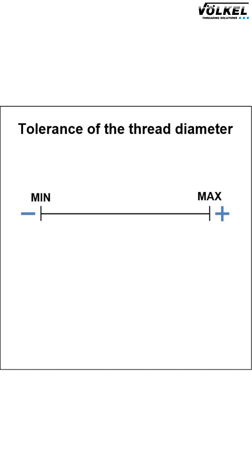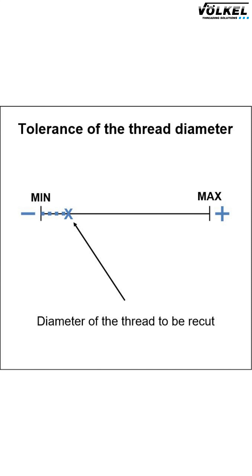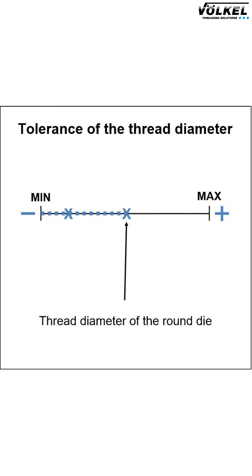The result essentially depends on whether the thread to be recut is manufactured closer to the permissible minimum value or closer to the maximum value within the permissible thread diameter. The same applies to the dies, which can also be made larger or smaller within the permissible thread diameter tolerances.